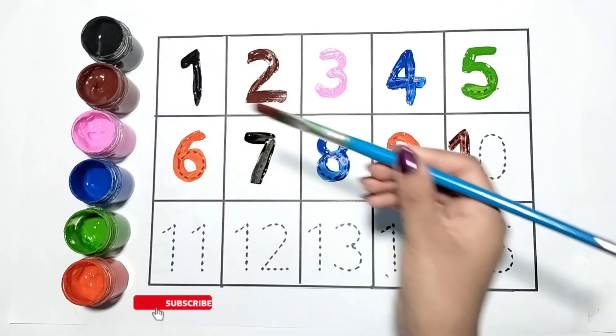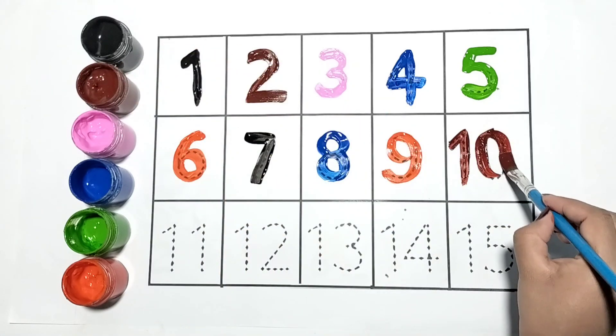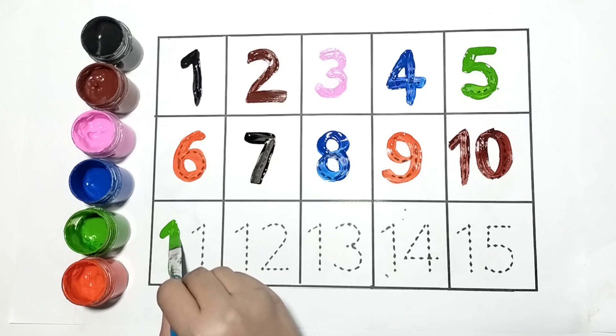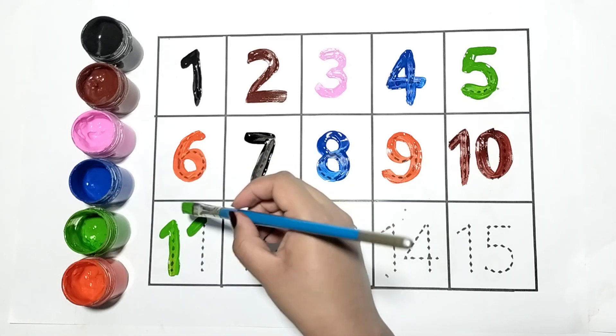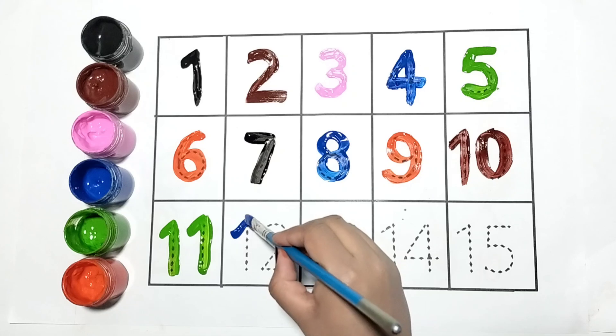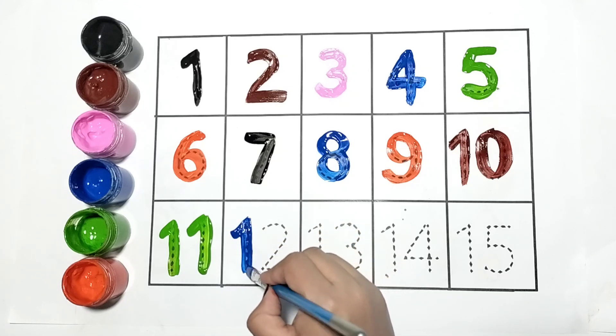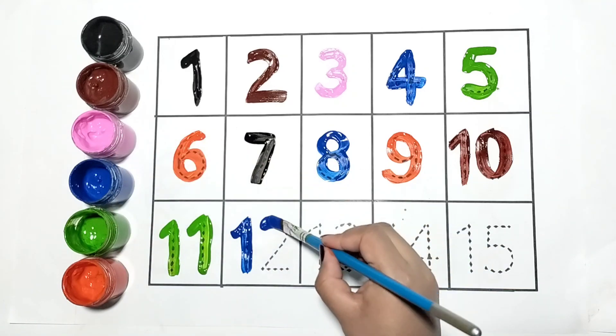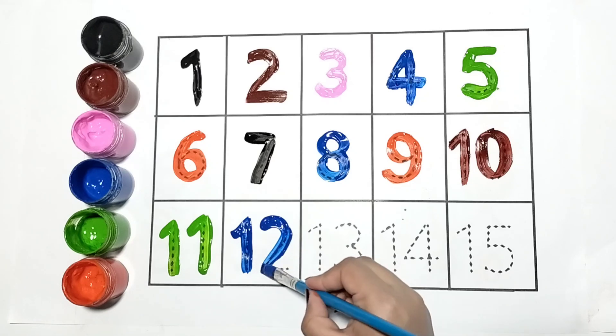Let's write number 10. This is number 10, it is in brown color. Now I am writing 11, kids repeat with me. This is number 11, it is in green color. Which is the next number? Yes, it is 12. Kids repeat with me, this is number 12.